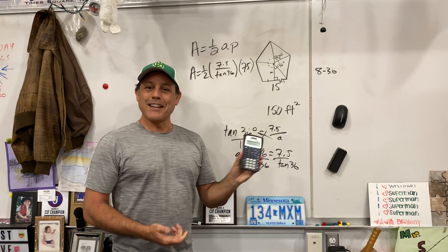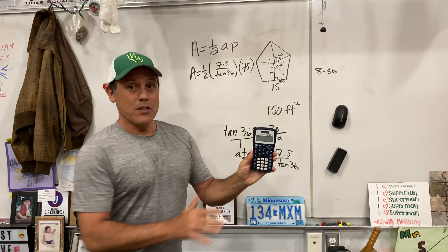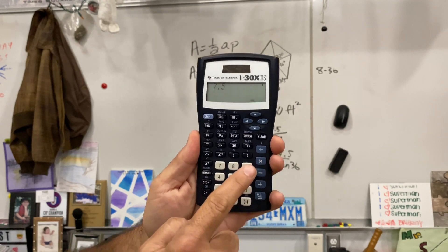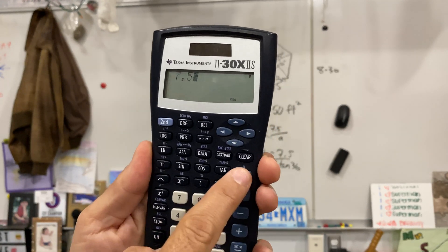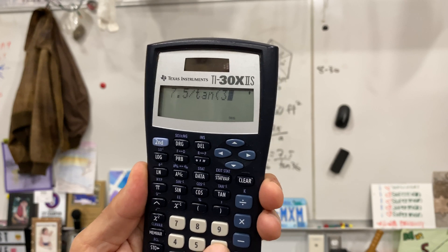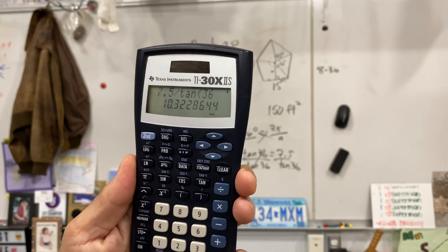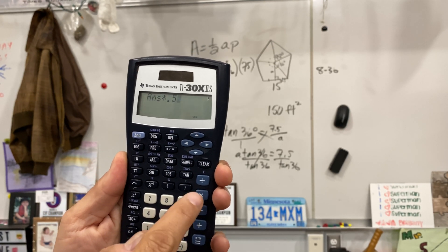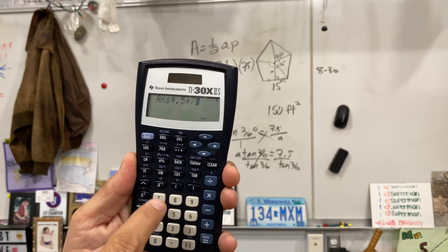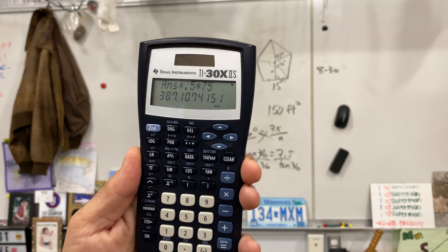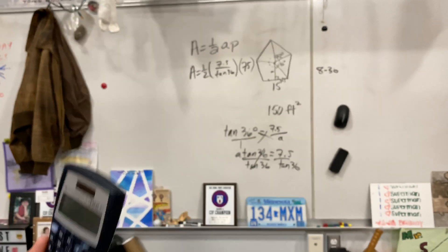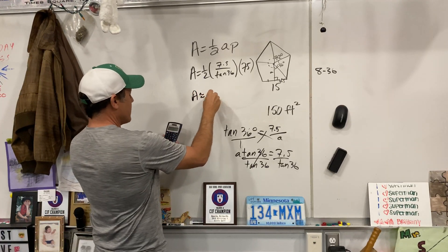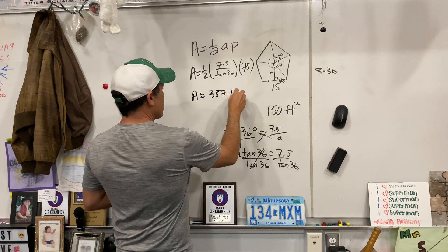Let's do the tricky part first. So get a calculator. I happen to have one right here. So let's take the calculator and let's put in 7.5 divided by tangent 36. Survey says that. Now, I don't want to waste my time and write that bad boy down. I'm just going to say times 0.5 and then times 75 equals whatever that is, 387 and change.